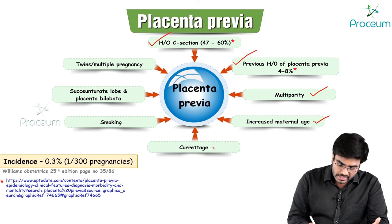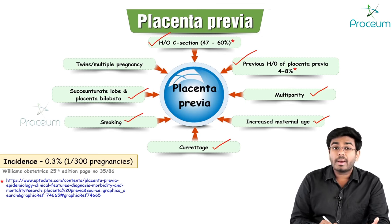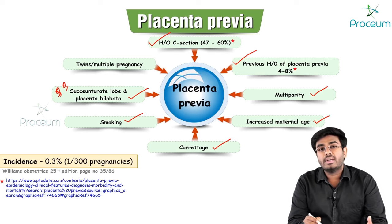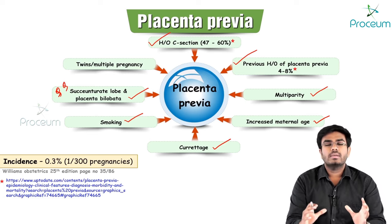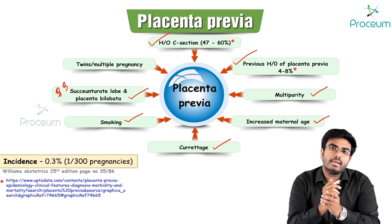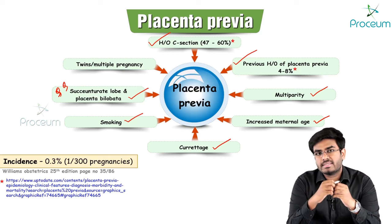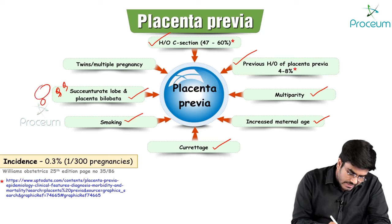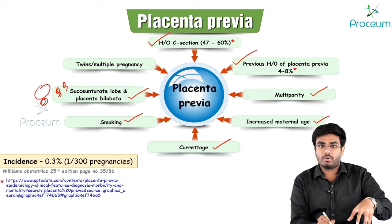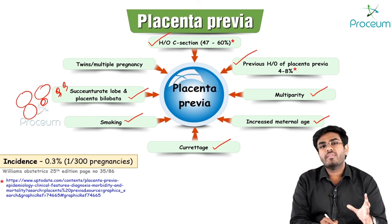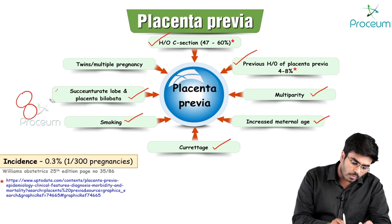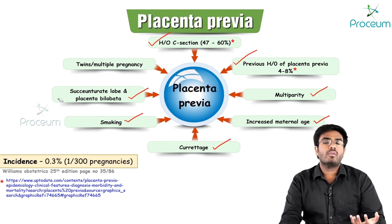Other risk factors include increased maternal age, curettage, smoking, succenturiate lobe, and placenta bilobata. Succenturiate placenta has a big main lobe and a small accessory lobe; in bilobata, there are two equally sized lobes. In either case, one lobe may come down to the lower uterine segment and get involved in bleeding.